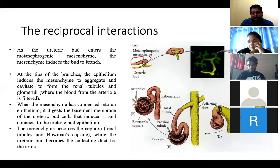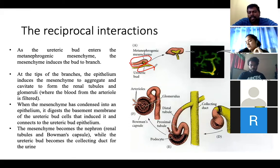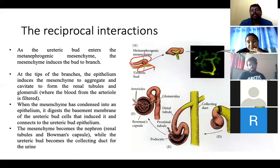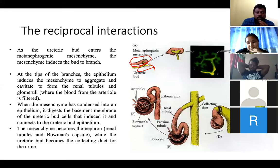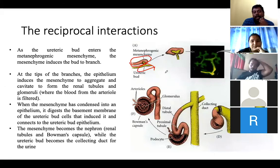The two tissues — the metanephrogenic mesenchyme and the ureteric bud — are the two tissues that are going to form the kidney. The interaction between these two tissues is what we are going to talk about. Both tissues interact with each other and influence each other's development.